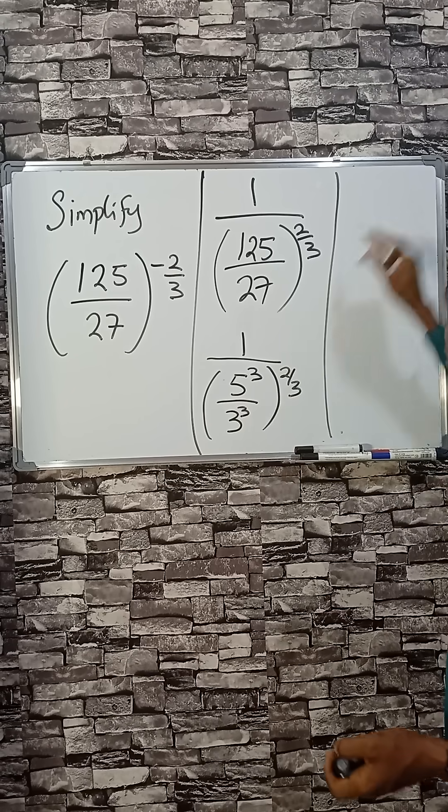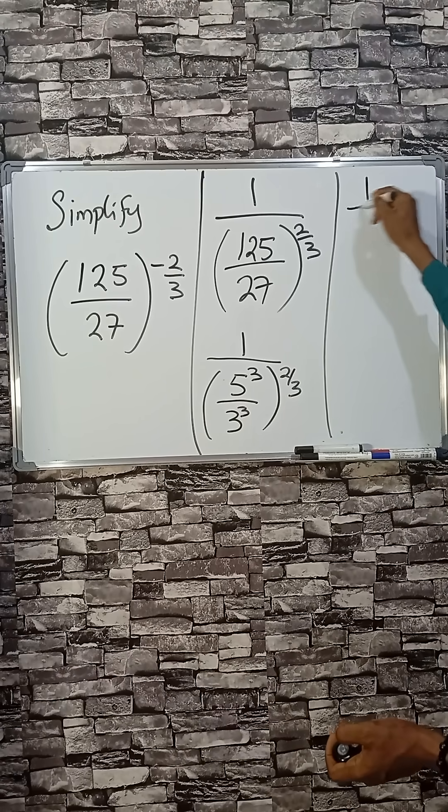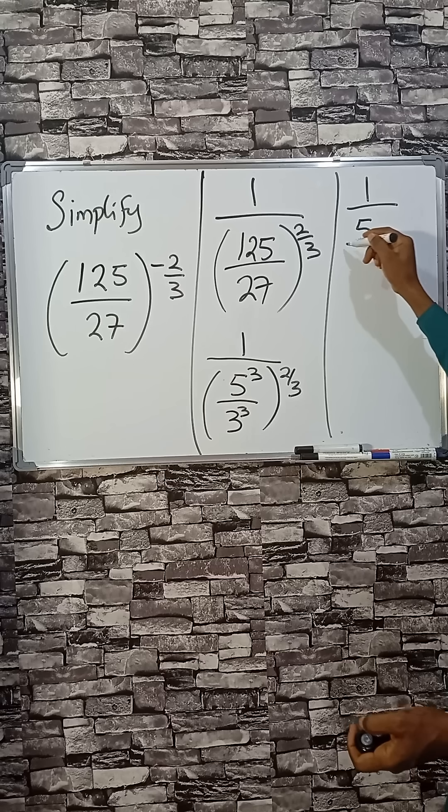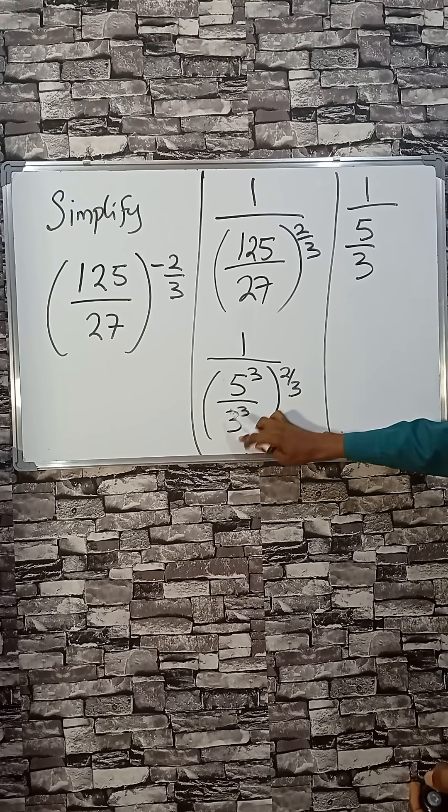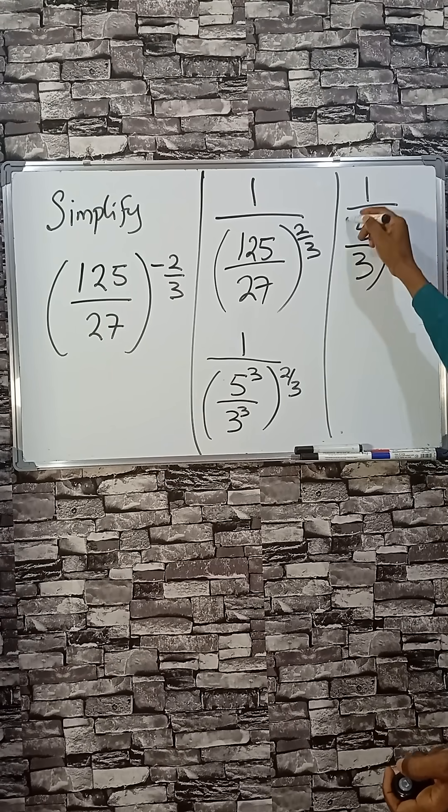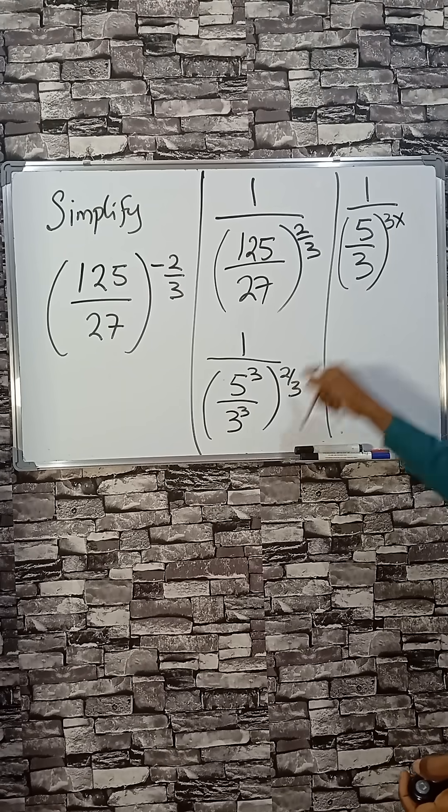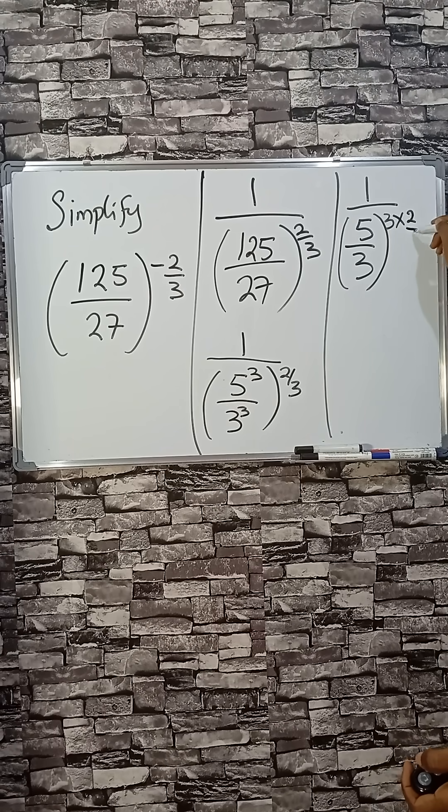So both here and here. So I can write this as 1 divided by 5 over 3, all cubed, then times 2 over 3.